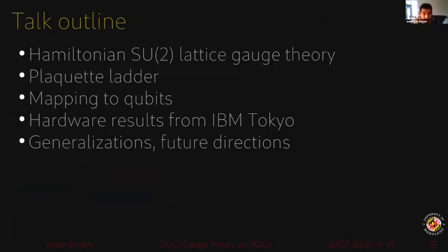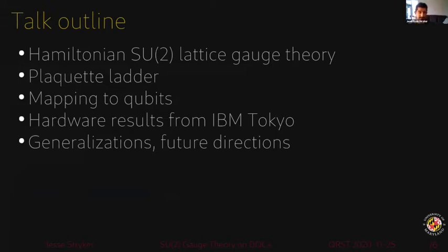If you have problems of this sort on the classical side, that leads us to ask whether quantum computers will allow us to solve them or make progress on them. The remainder of the talk, I'm going to introduce Hamiltonian SU(2) lattice gauge theory as an example of a non-Abelian lattice gauge theory. I'll introduce the particular geometry that we looked at in order to do a concrete simulation, explain the mapping to qubits and summarize the results we got by simulating on the IBM Tokyo chip, and finally comment on possible generalizations and future directions.